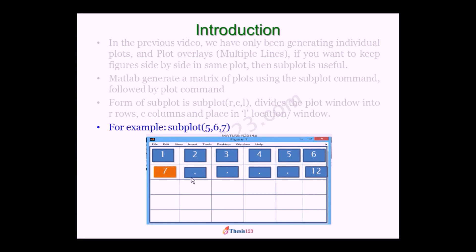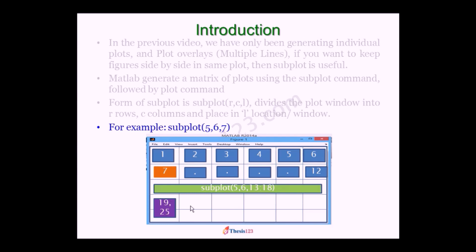But if I want to plot across the total window — spanning all of them — then we can write subplot(5, 6, 13:18). So if you give subplot(5, 6, 13:18), then all those blocks will be plotted with a single figure. Similarly, if you want to span vertically, then you give locations 19 and 20 accordingly. Like this, we can also create asymmetric subplots in the same single window.